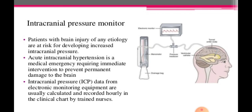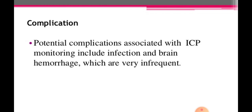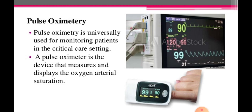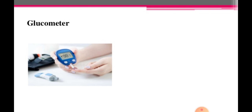Patients with brain injury of any etiology are at risk for developing increased intracranial pressure. Acute intracranial hypertension is a medical emergency requiring immediate intervention to prevent permanent brain damage. Intracranial pressure data from electronic monitoring equipment are usually calculated and recorded hourly in the clinical chart by trained nurses. Potential complications associated with ICP monitoring include infection and brain hemorrhage, which are mostly infrequent. Pulse oximetry is universally used for monitoring patients in the critical care setting; a pulse oximeter measures and displays oxygen arterial saturation that is SpO2. A glucometer is used to check blood glucose levels.